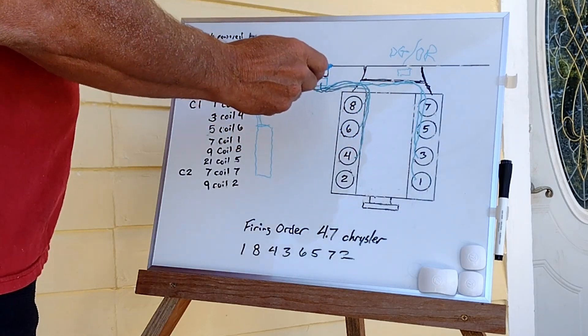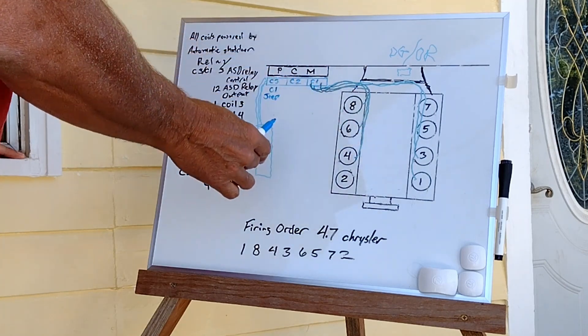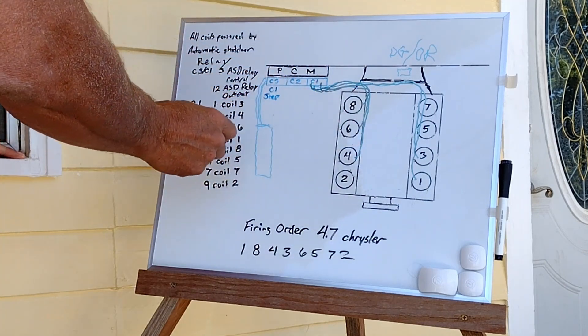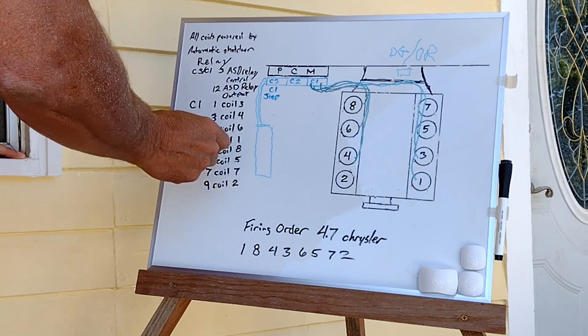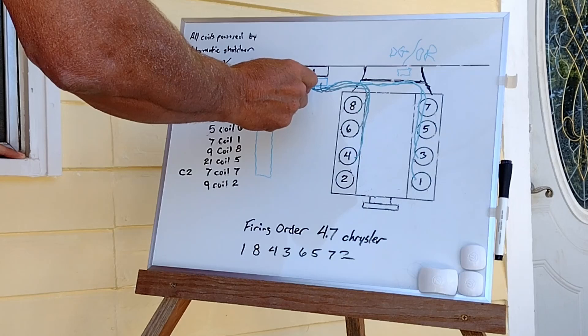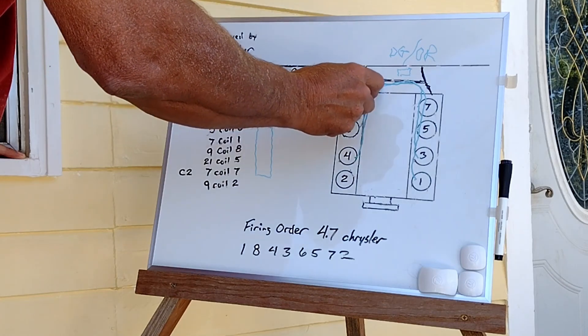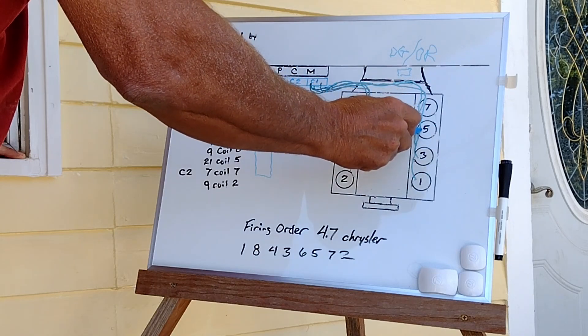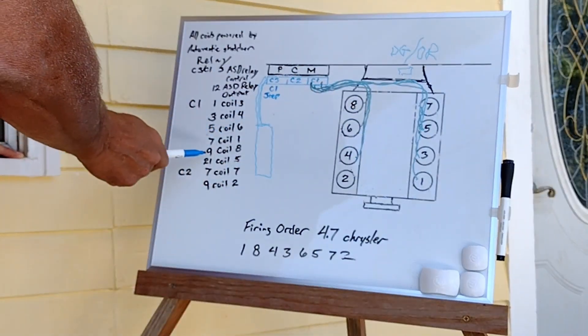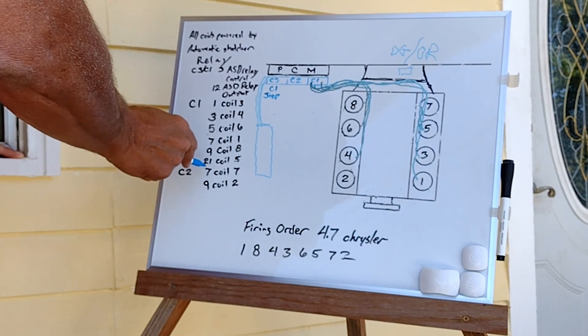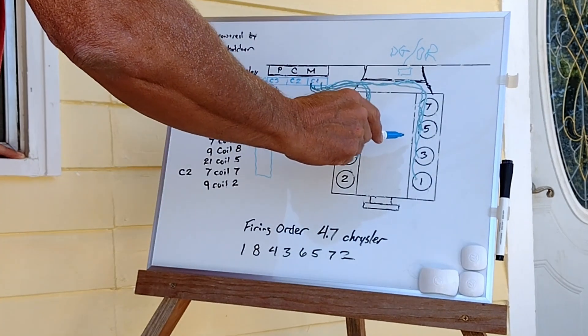Loosely bundle them so that on the finish you can bundle those up tight. Our next wire is going to be pin 21 from C1, and it is going to go over to coil number five. Now you're finished with C1. C1, you have six wires.